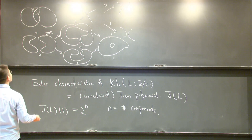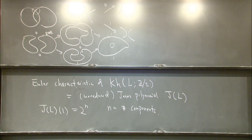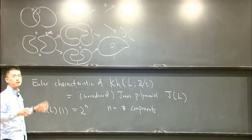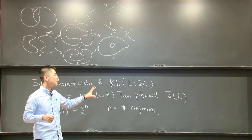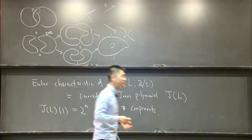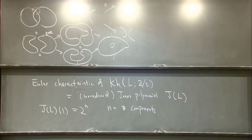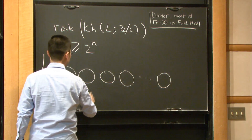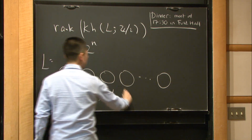Although in the definition of quantum homology we need L to be oriented, the rank of the quantum homology does not depend on orientation. Changing the orientation of some components only shifts the two gradings but doesn't change the rank. So we can talk about the rank of the quantum homology of an un-oriented link. The previous observation proved that the rank is at least 2^n. The trivial link always achieves this lower bound — the rank of its quantum homology over Z/2 equals 2^n.